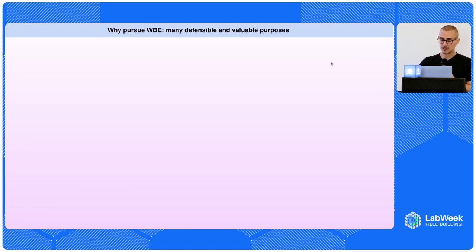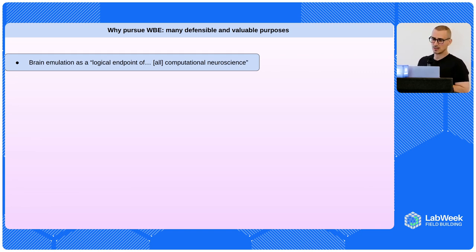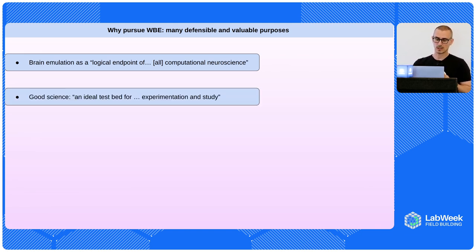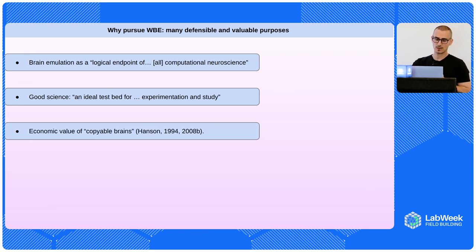Brain emulation is really the logical endpoint of computational neuroscience — I would say it's the logical endpoint of all of science, and even more than that. If we can do this, we're really at a different point in civilization. Of course, there's also good science along the way — we're going to learn a lot of things and be able to do experimentation and study the brain in ways we've never really been able to.